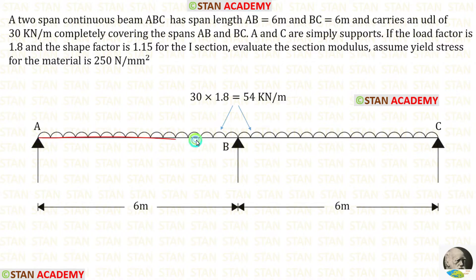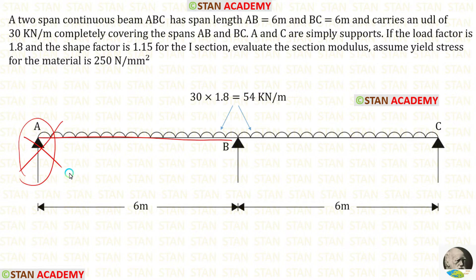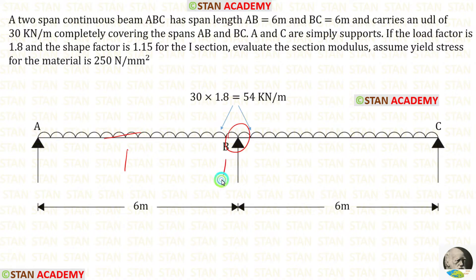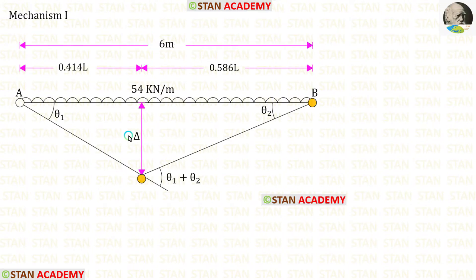Let us take the span AB and form the first mechanism. In span AB, at point A there will be no plastic hinge because it is a simply supported end. Under the UDL we will have one plastic hinge, and at joint B we will have one more plastic hinge — so totally two plastic hinges. Let us keep the virtual displacement as delta, this angle as theta1, this angle as theta2, so this angle should be theta1 plus theta2.